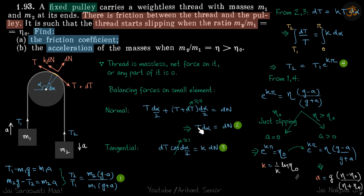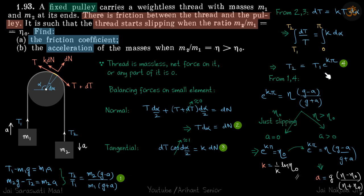We can now relate the tension in the thread to the tension at the ends. Taking equations 2 and 3 and dividing to eliminate dn, we get: dt by t equals k times d-alpha. Integrating — tension varies from t1 to t2 and alpha varies from 0 to pi — we get t2 equals t1 times e raised to the power k*pi.